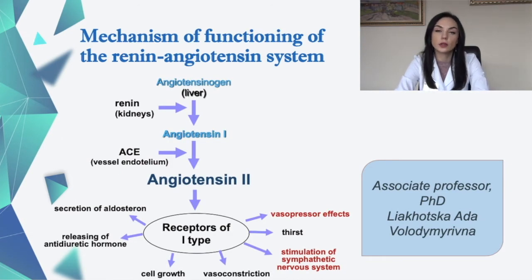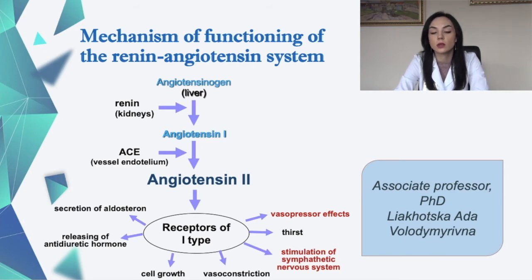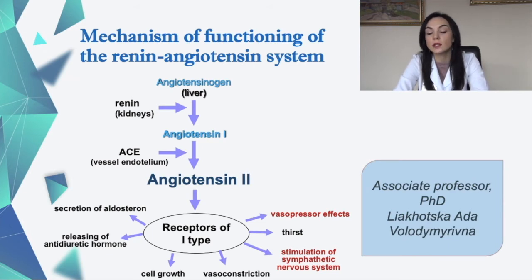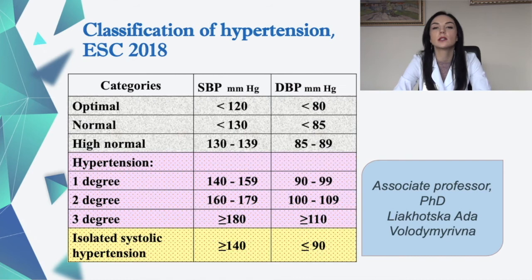In this picture you can see the mechanism of functioning of the renin-angiotensin system. It all starts from angiotensinogen produced by the liver. Renin, produced by the kidneys, participates in this process, forming angiotensin I. ACE from the vascular endothelium then converts it to angiotensin II, which acts on type 1 receptors. This leads to secretion of aldosterone, release of antidiuretic hormone, cell growth, vasoconstriction, stimulation of the sympathetic nervous system, and ultimately vasopressor effects that significantly increase blood pressure.